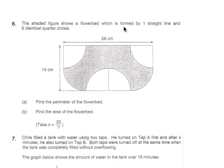Let's read the question. It says the shaded figure shows a flowerbed. You know what's a flowerbed? It's basically like a place where you put flowers. It's formed by a straight line and 6 identical quarter circles. Find the perimeter of the flowerbed. Perimeter means what? It means the outline.